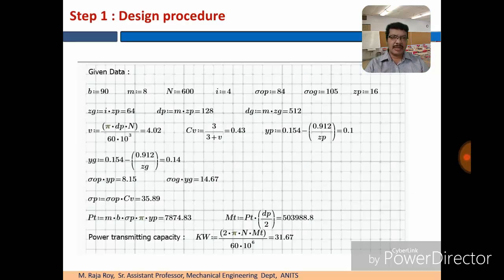Given data is something like this: face width is given, module is given, speed is given, velocity ratio is given, allowable static stress 84 for pinion, for gear it is 105 N/mm². Number of teeth on the pinion Zp equal to 16. Zp is given, velocity ratio is given, from that you can get Zg value.